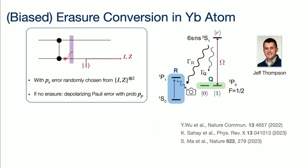The noise channel of this controlled-Z gate is: with some probability PE, I apply an identity or Z error on one of the two qubits. If there's no erasure, then I assume it's a depolarizing noise channel. In this system, we predicted an erasure fraction of about 98%. Recently, in Jeff's group, they actually demonstrated erasure conversion in this ytterbium atom qubit — not quite at the 98% level yet, but we are getting there.